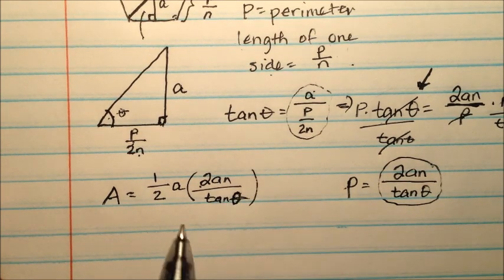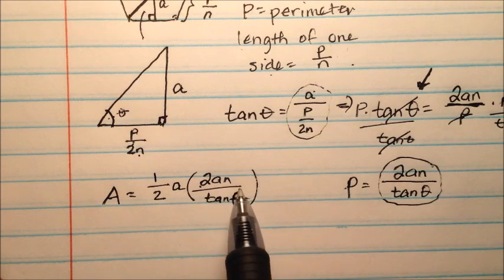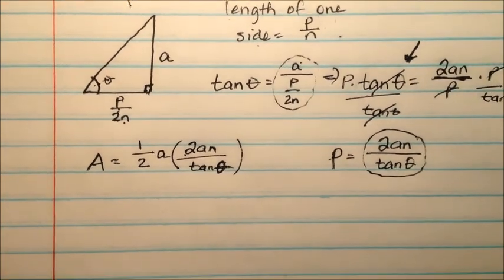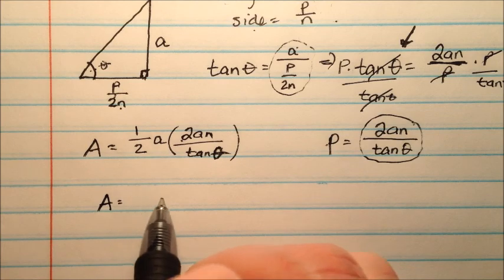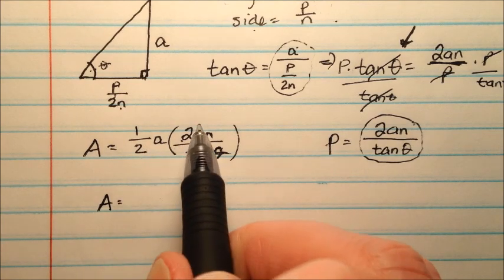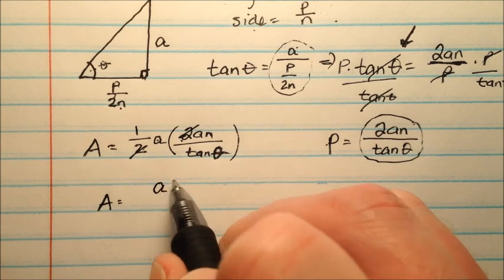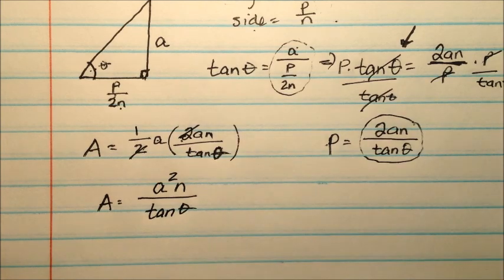I've kind of gotten rid of my perimeter now. I have the apothem a couple places. But I have two new values. I have n and I have this theta. What's that theta going to be? Let's simplify this a little bit and then we'll take a look at what the theta is. So the 2 on top and the 2 on bottom can cancel. The a times the a will be a squared times n over the tangent of theta.